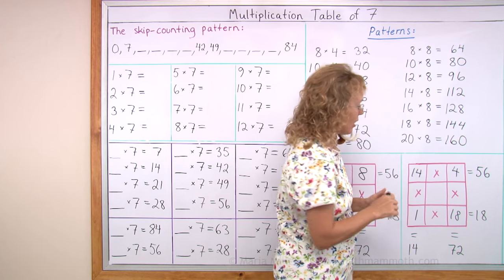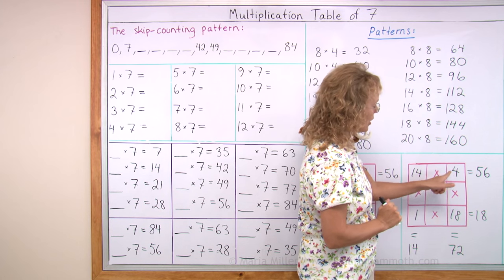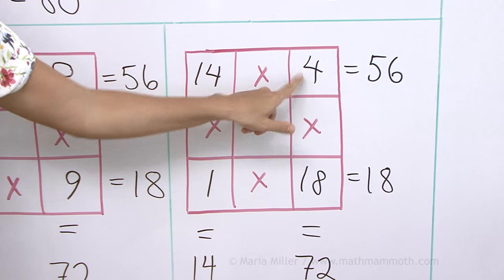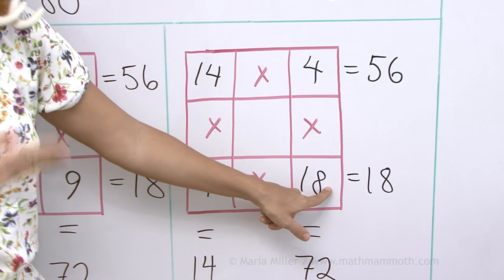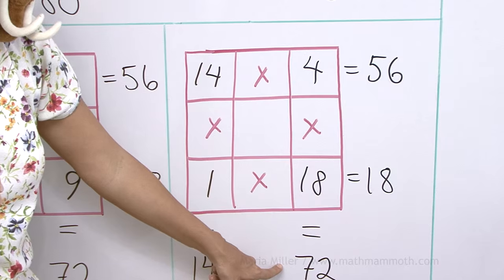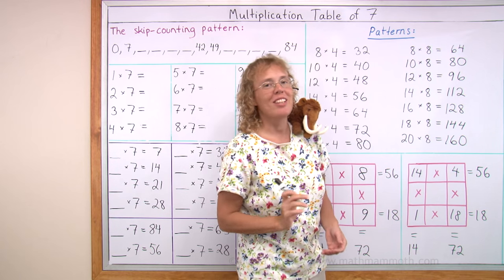To check that, you can think this way. Since it is the table of four, something times four, you can double twice. So take eighteen, double it, thirty-six. Double it again, seventy-two. Okay, so we're all done with this lesson.